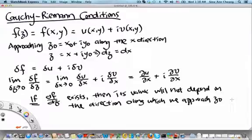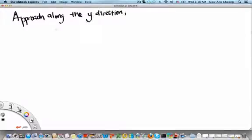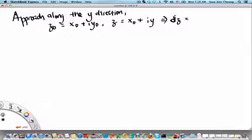For example, if we approach along the y direction, then z0 is still equal to x0 + iy0, but z will be equal to x0 plus iy. And therefore, delta z will be equal to i delta y, because if I take z minus z0, which gives me delta z, I find that the x0 cancel, and then I will have iy minus iy0, which is the same as i delta y.